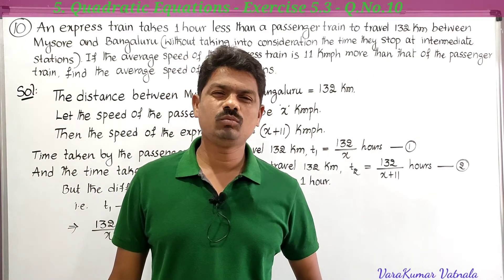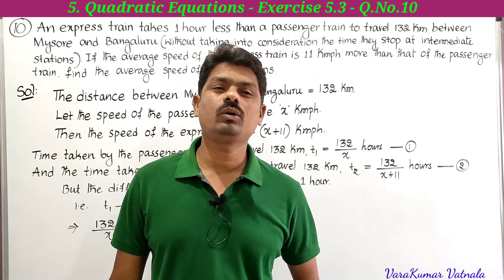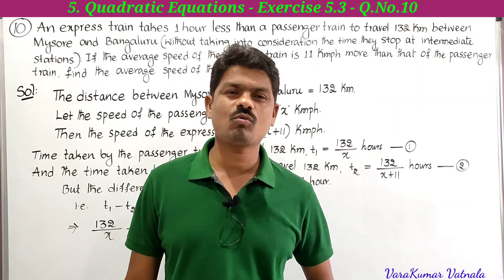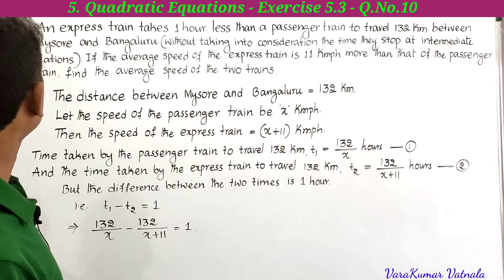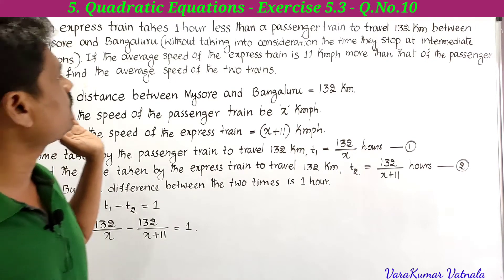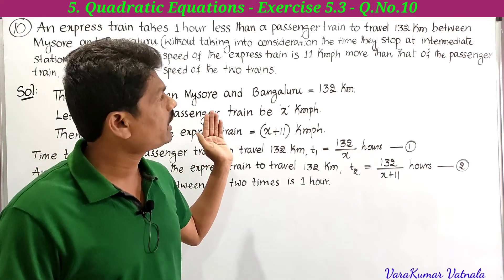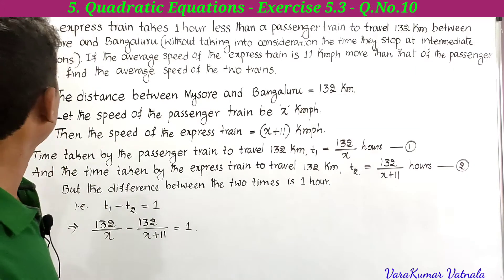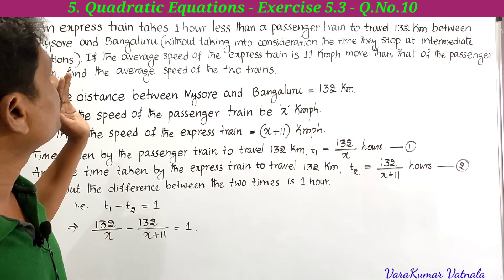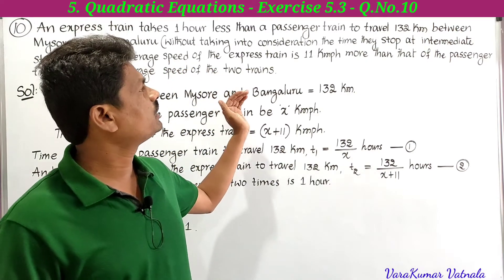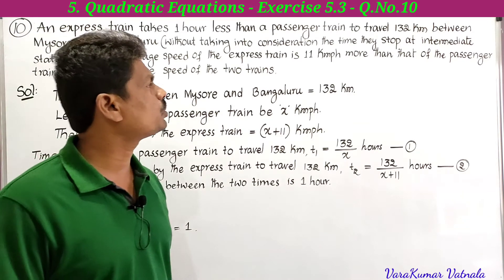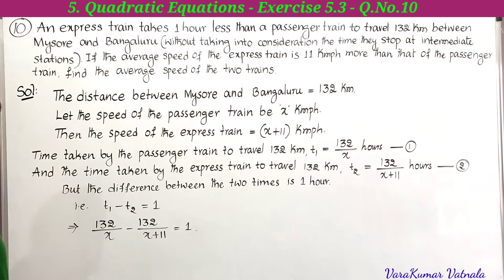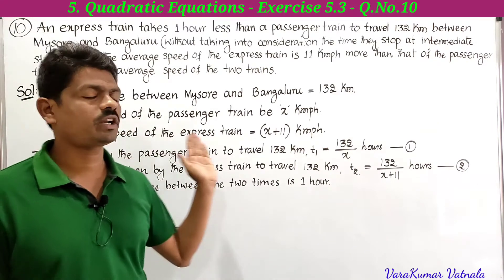Hi, hello, welcome to my channel Learn More Maths. My name is Varakumar. Today we are going to solve a problem from the fifth chapter, Quadratic Equations, Exercise 5.3, tenth problem. The problem asks: an express train takes one hour less than a passenger train to travel 132 kilometers between Mysore and Bangalore. If the average speed of the express train is 11 kilometers per hour more than that of the passenger train, find the average speed of the two trains.